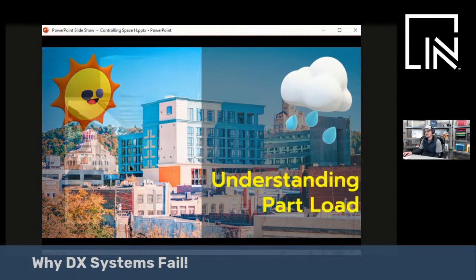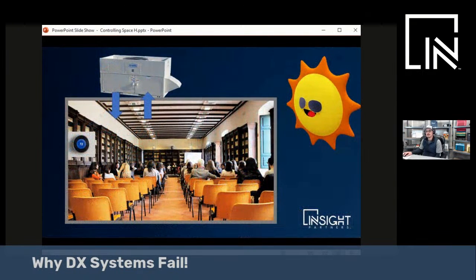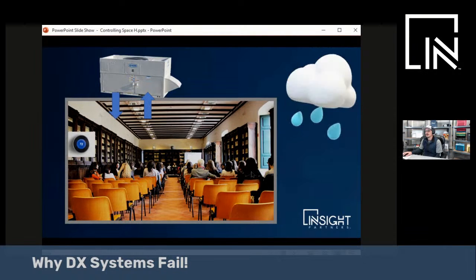Very briefly, systems are typically designed for full-load days. It's the middle of the summer, it's hot out, the sun's shining in all the windows, you have a bunch of people in the space. You want very cold air in that space. On an off-design day, October, November, it's cool, it's rainy, if you blow very cold air into that space, you're going to freeze everybody out.